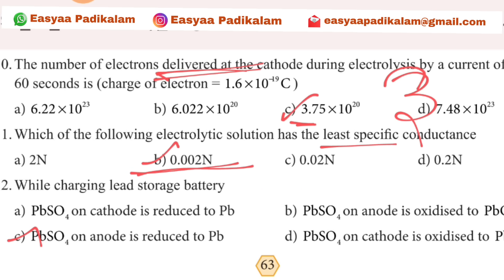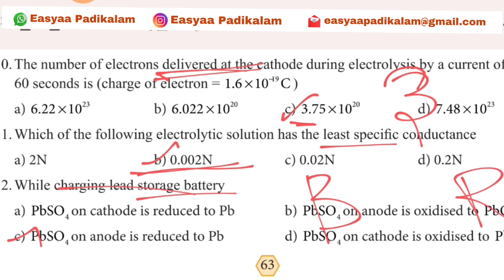Twelfth question: while charging a lead storage battery, what color LED do we use? Red color LED. If you use an LED pencil, you can use black color. Now we have the red color. So the answer is red.